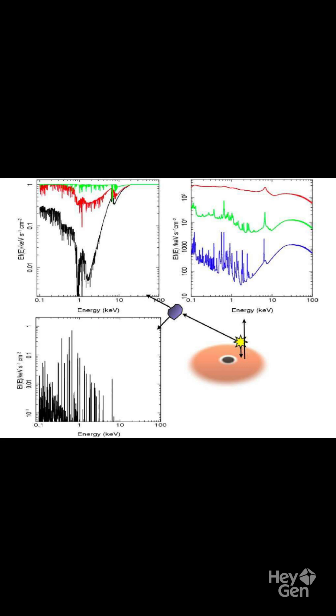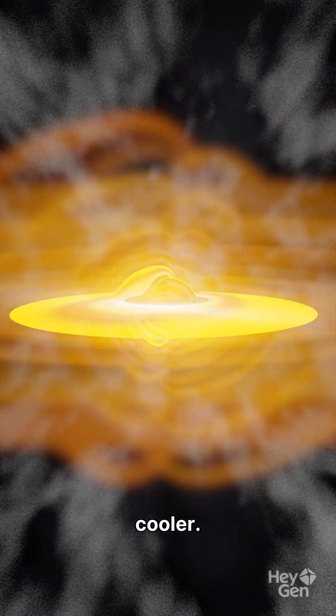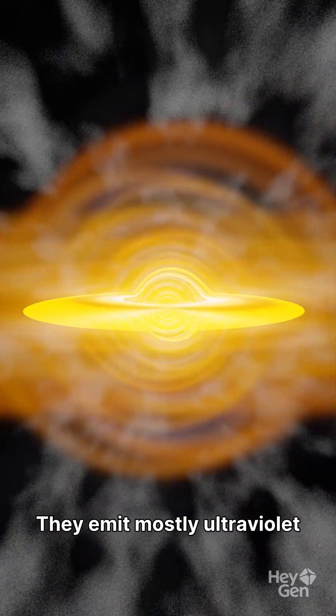The answer lies in temperature. Discs around supermassive black holes are enormous but cooler. They emit mostly ultraviolet light.